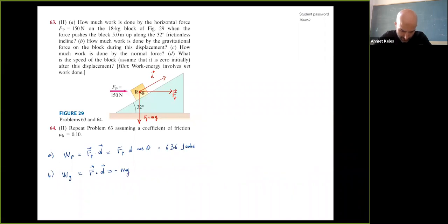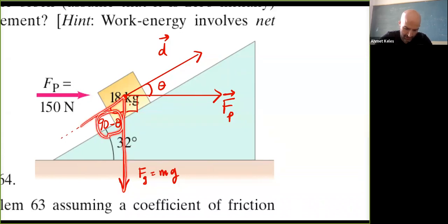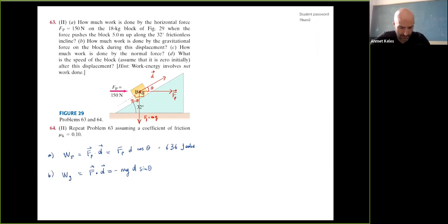The work done by gravity is W_g = -mgd sin θ. The angle analysis: the displacement is along the incline at angle θ, and the component of gravity along the incline (in the opposite direction) is mg sin θ. So W_g = -mgd sin θ, which gives a negative value.